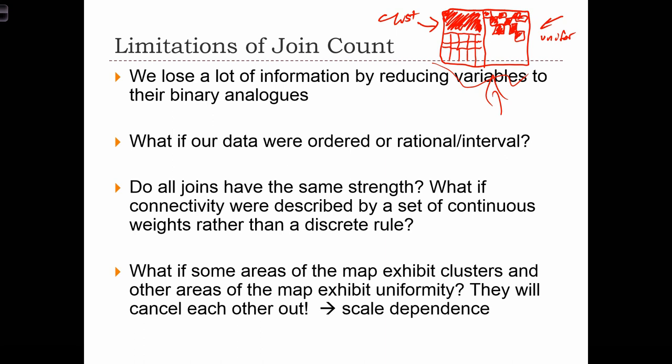This is an example of scale dependence. If we compute the statistic on the entire map, it appears random. But if we reduce the scale and compute one statistic for the left side and one for the right side, our two statistics are going to have very different results. We'll be looking at statistics in the future that can solve all of these problems and limitations we just encountered with the joint count.